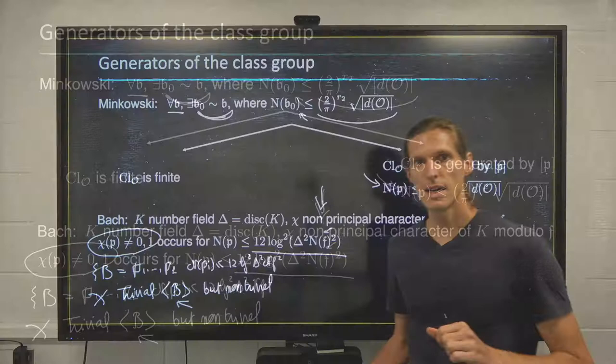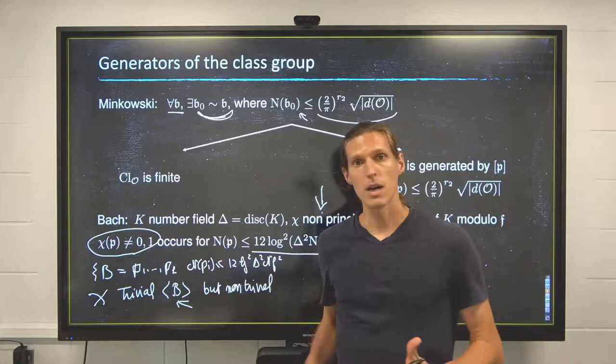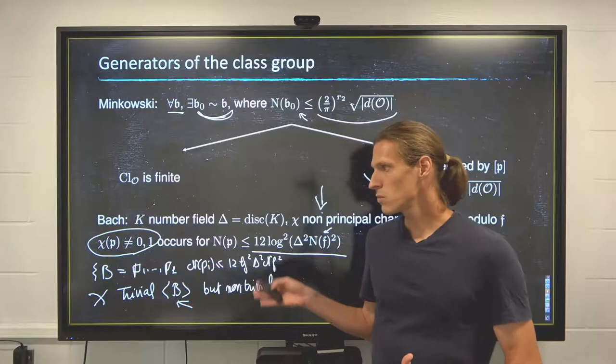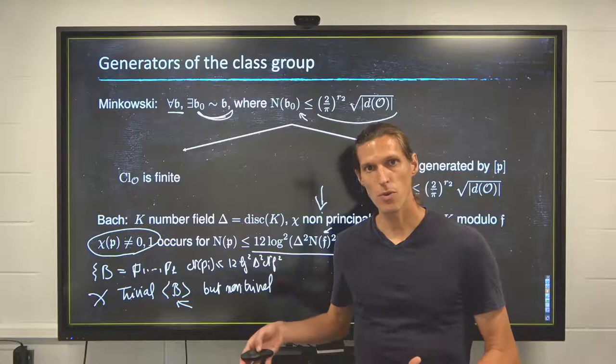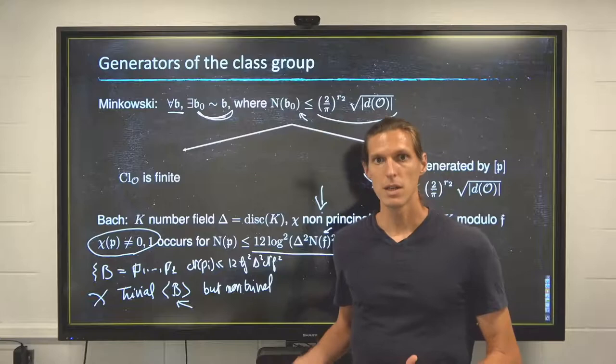So what that tells us here is that if these primes were to not generate the class group, then we would be able to construct a non-trivial character that is trivial on all those primes of norm less than 12 log squared delta squared norm of the conductor squared. But that is exactly in contradiction of the result of Bach.